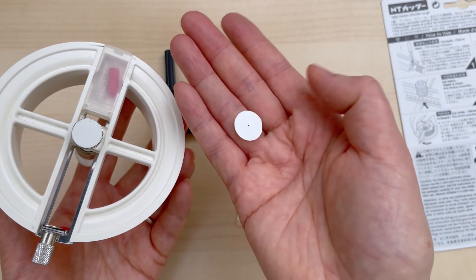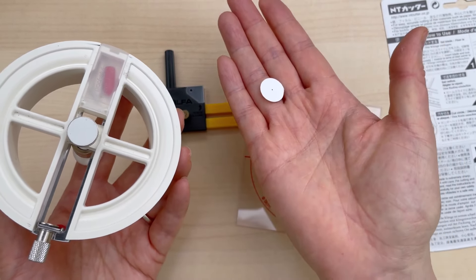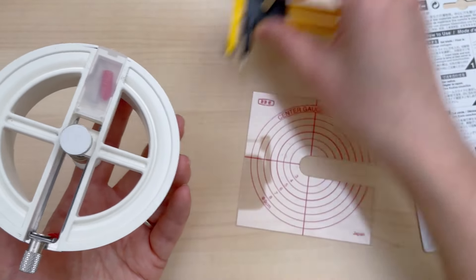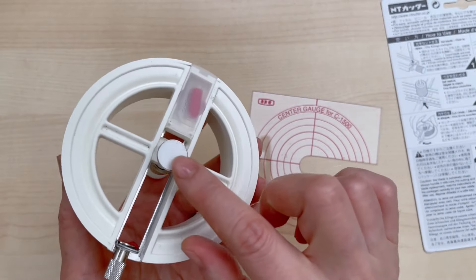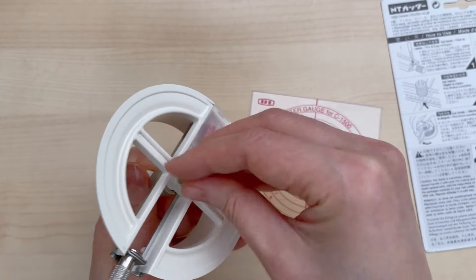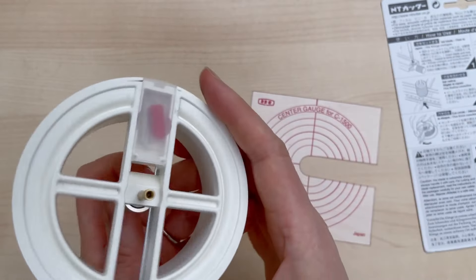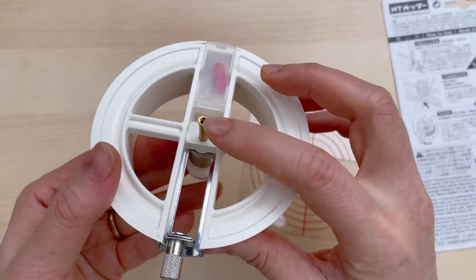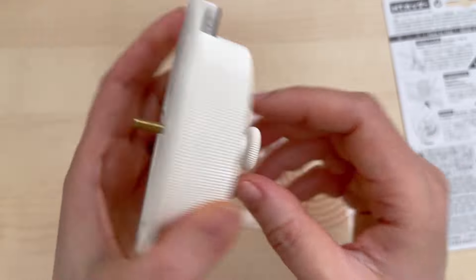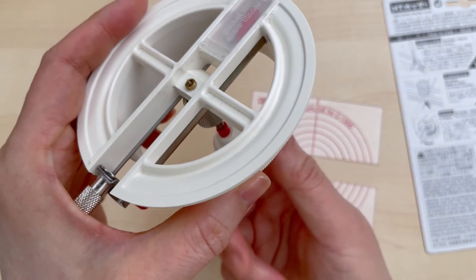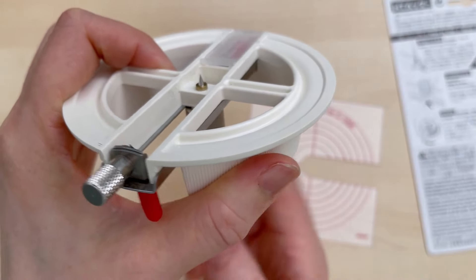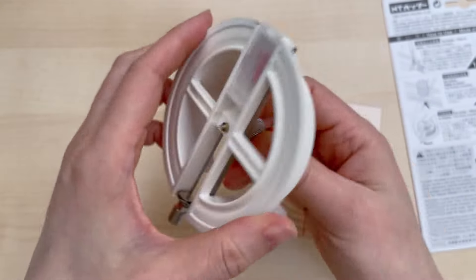So then from there you're wondering, oh well, how does that stay in the middle? Haha, that's what this part here is for. So we just turn this part here and watch what happens. Do you see, now there's a spike that comes out of the middle. Isn't that so cool?